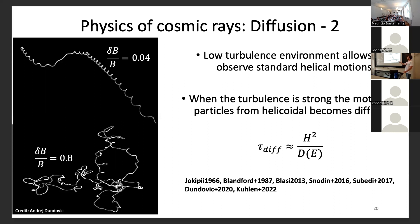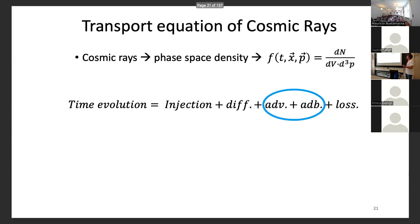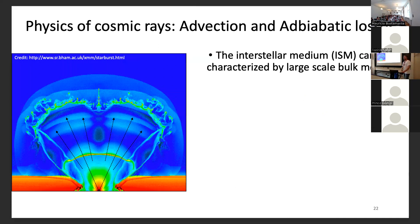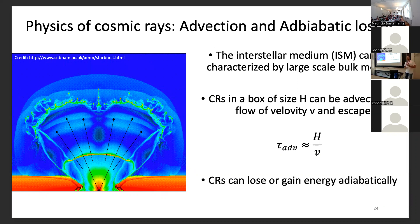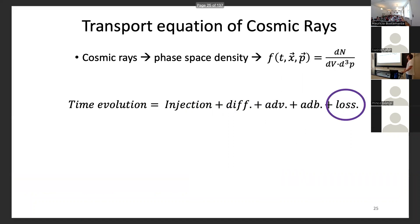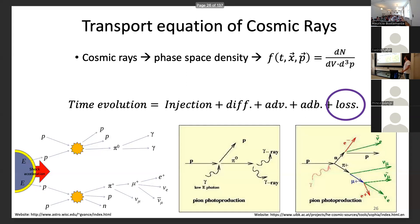Diffusion is not the only process affecting particles. We have advection and adiabatic energy losses. Cosmic rays are confined in magnetized bubbles, and these pieces of volume might be swept away in an outflow — the advection timescale is the size of the system divided by the advection speed. Additionally, if the outflow has an expanding geometry, cosmic rays lose energy adiabatically like a gas of relativistic particles. Finally, for our interest, there are hadronic interactions responsible for neutrino production.